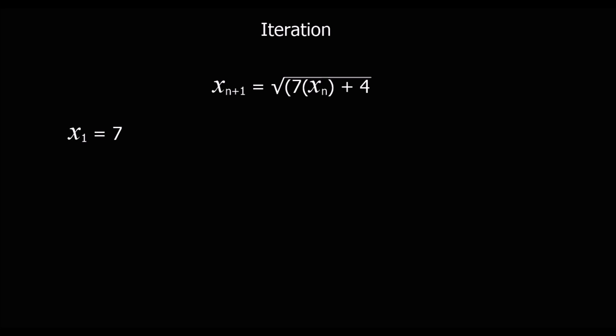So here we've got an iteration question. This formula looks very complicated, but it's actually not. All this means is the next term is the square root of 7 times the previous term plus 4. So x1 just means the first term, and we're told that's 7.